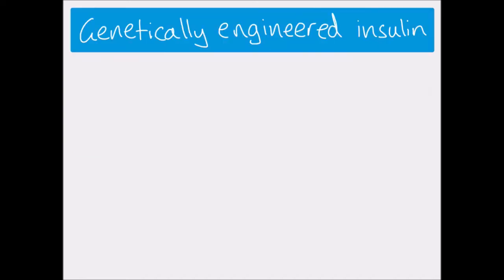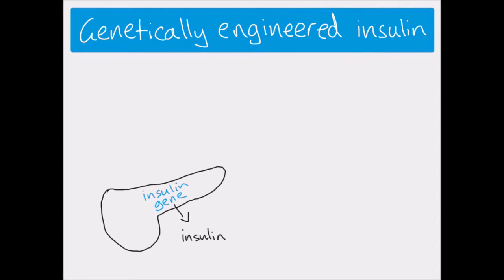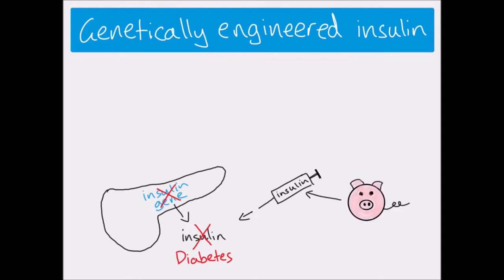For an overview I'm going to use the example of genetically engineered insulin. Normally the pancreas would transcribe the insulin gene and produce the insulin protein, but if there's something faulty with that gene then the protein is not going to be produced and the person has diabetes. In that case we have to inject insulin, which means we have to get it from another source — in the past we've taken it from pigs. There are quite a lot of problems with that, not least ethical issues.